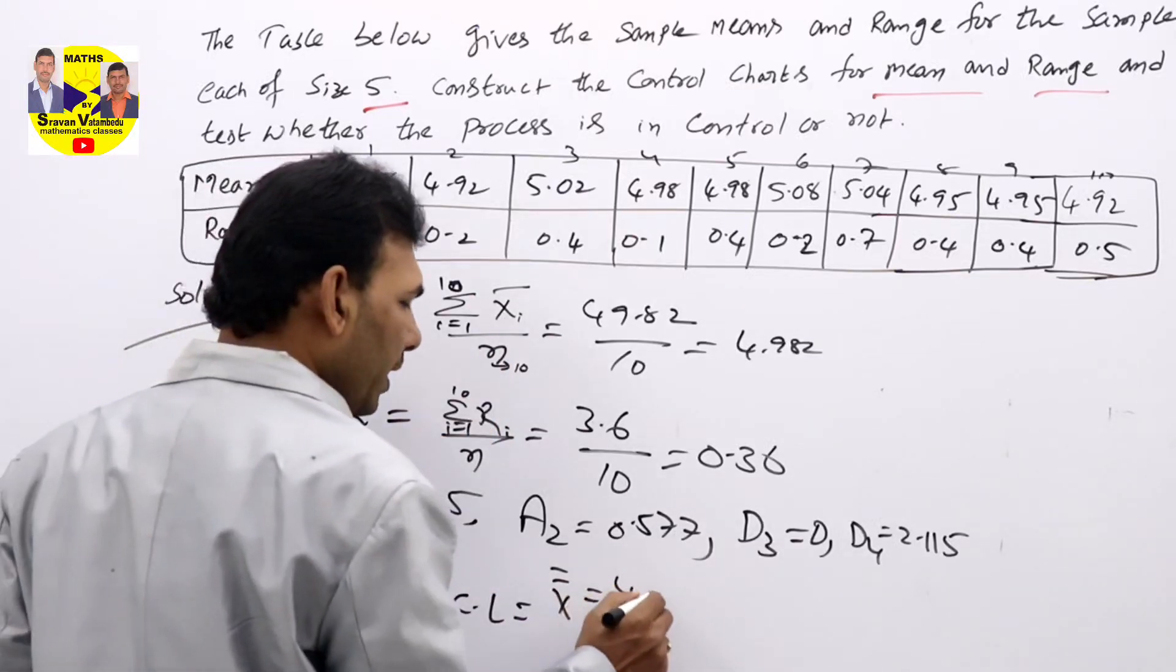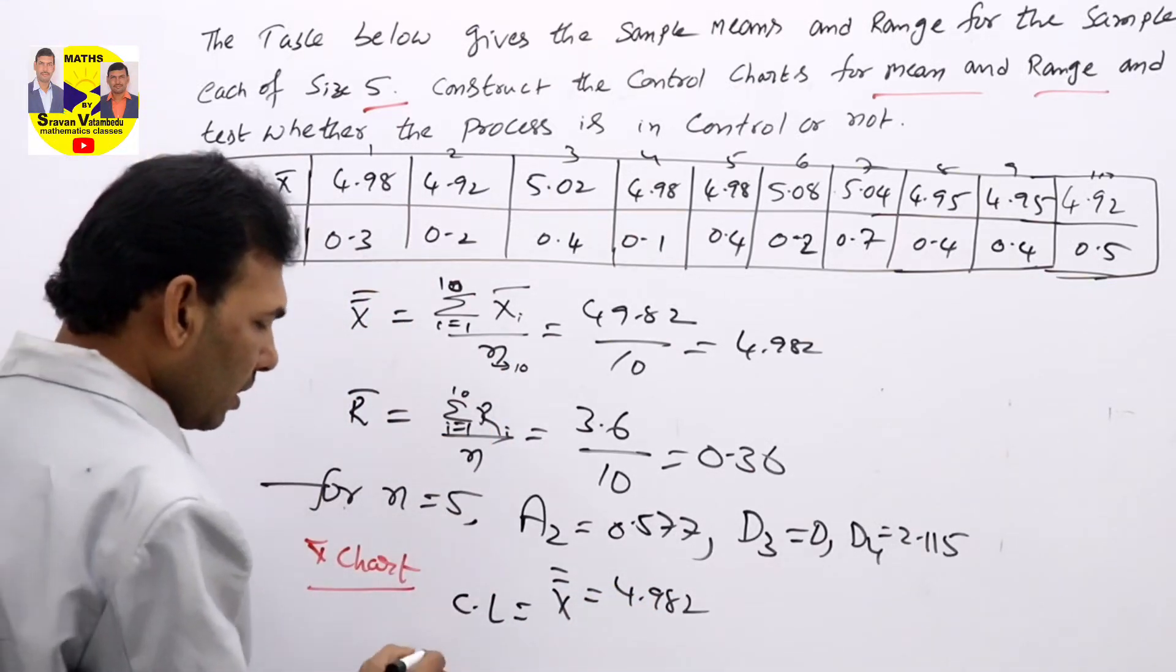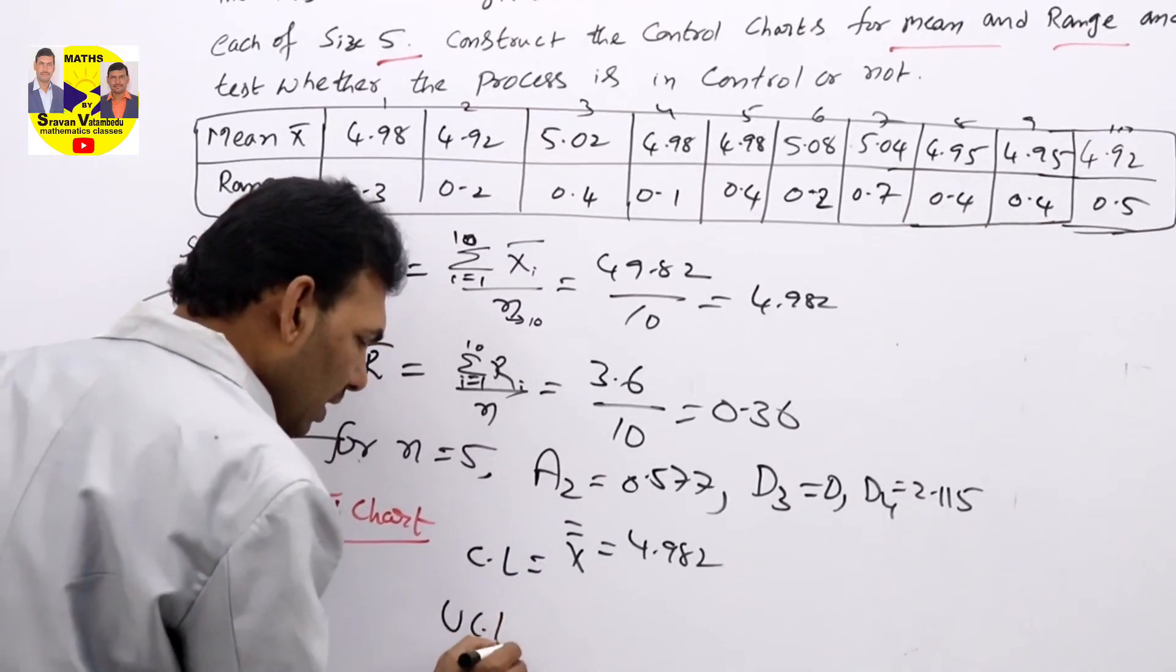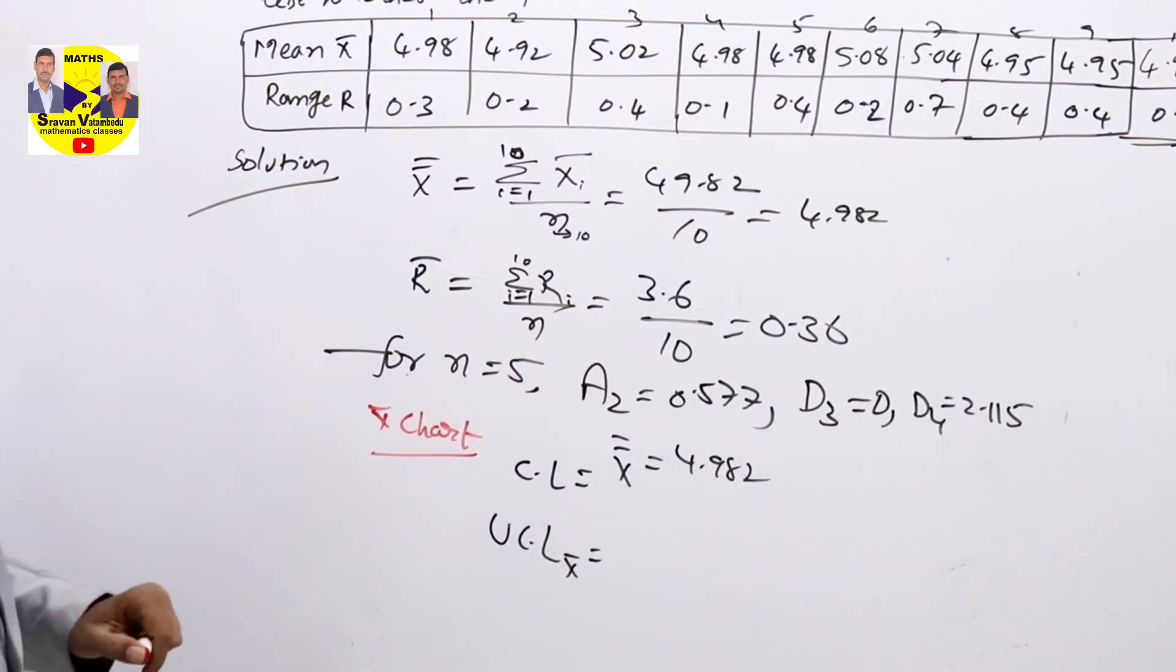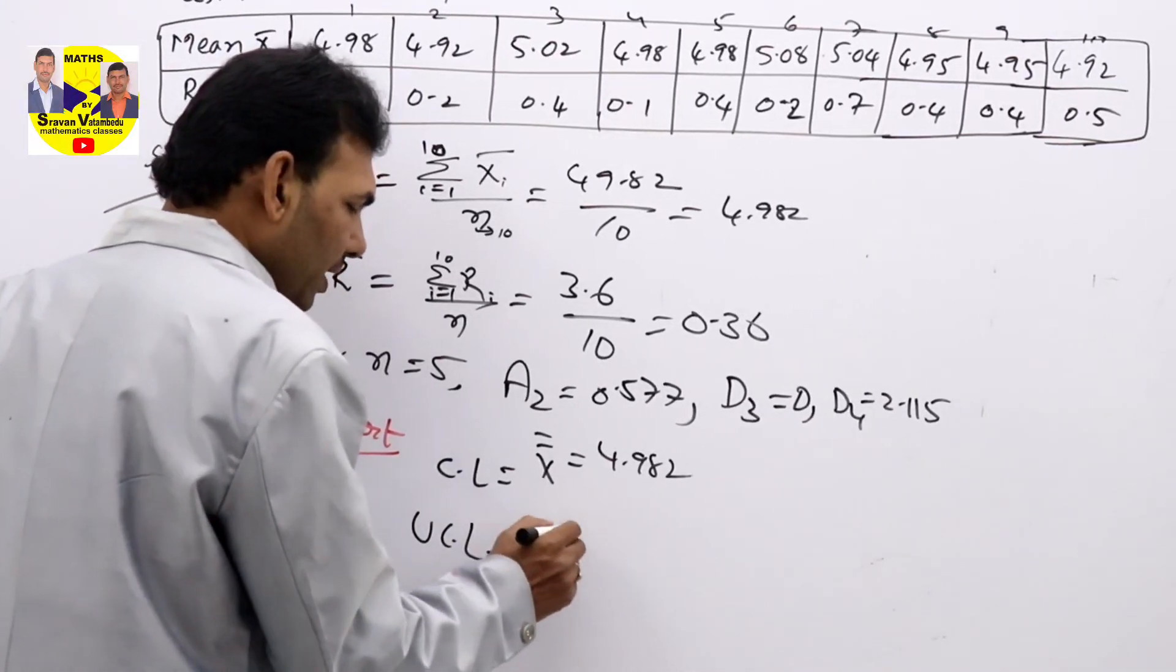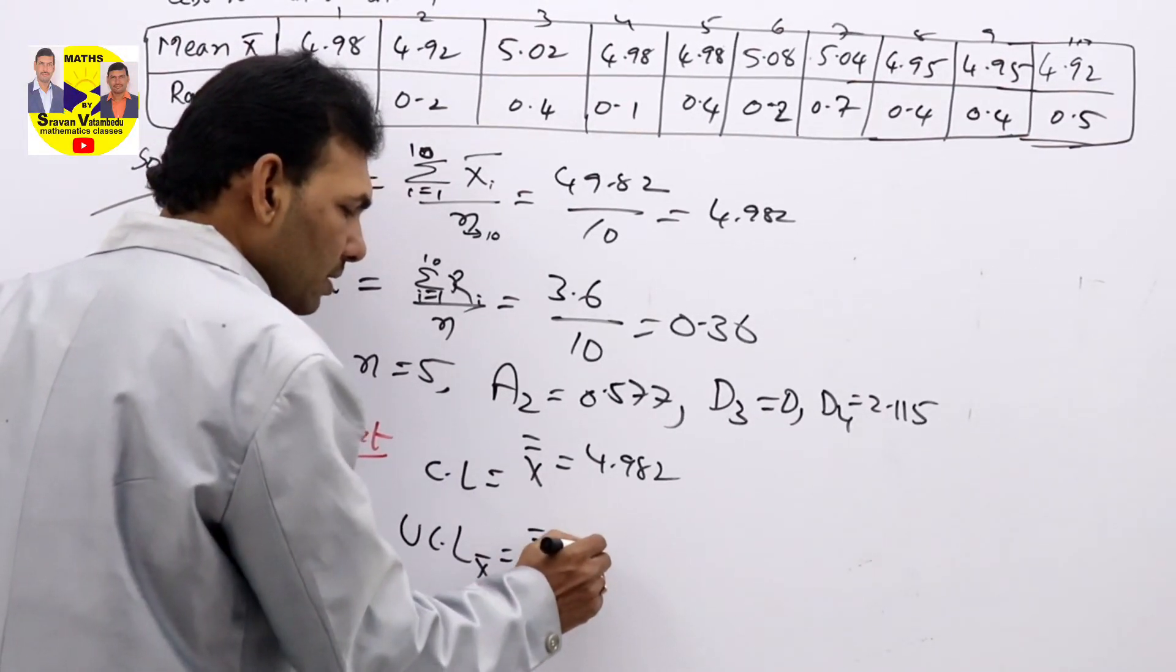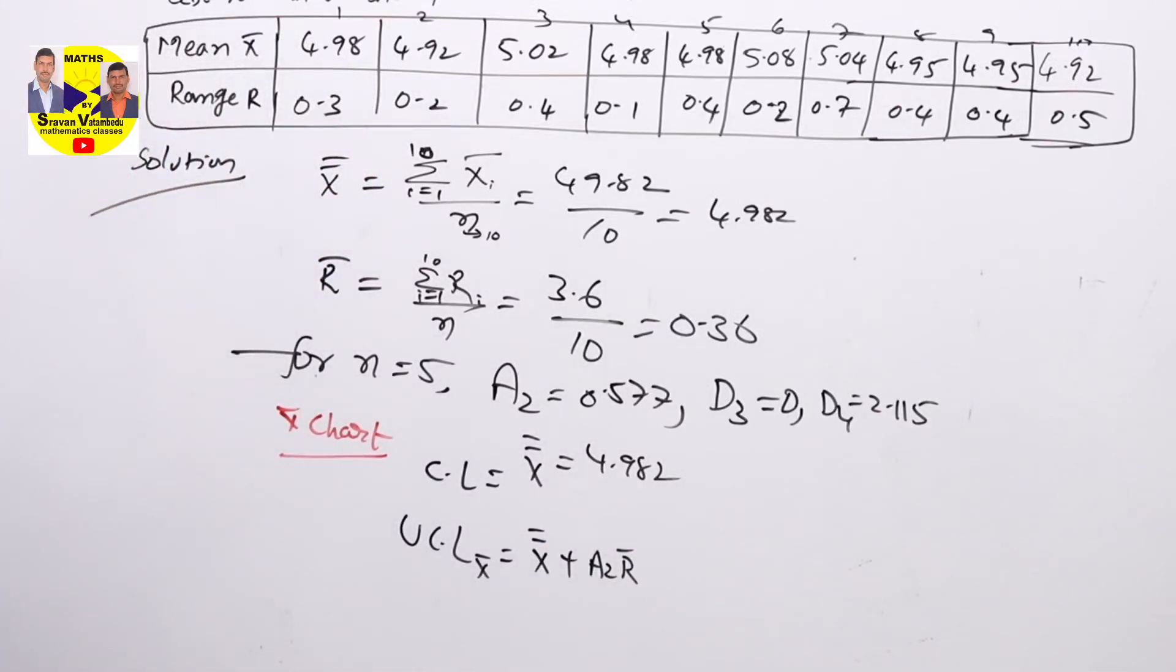The second line: UCL X bar—mean upper control line or upper control limit—can be calculated like this: X double bar plus A2 R bar.